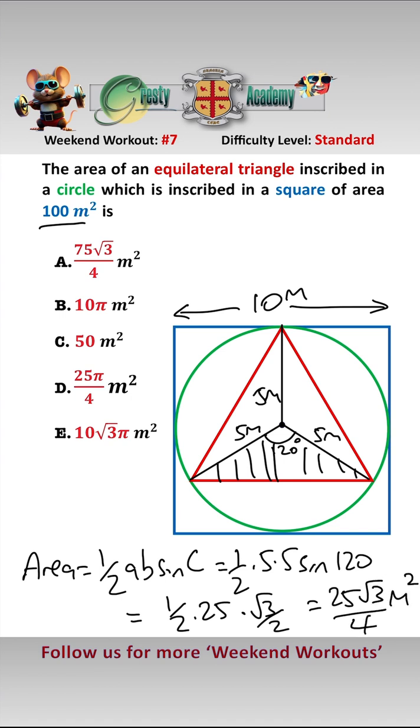But there are three of these triangles, and by symmetry they are all exactly the same area, so all we need to do is multiply this by 3, which gives us 75 root 3 over 4 meters squared, which is answer A.